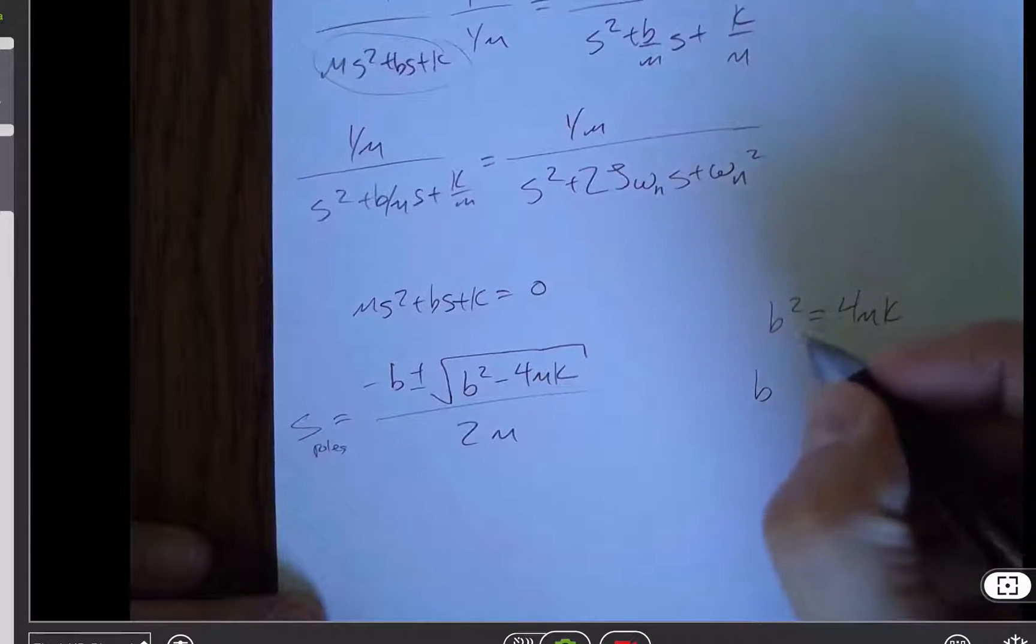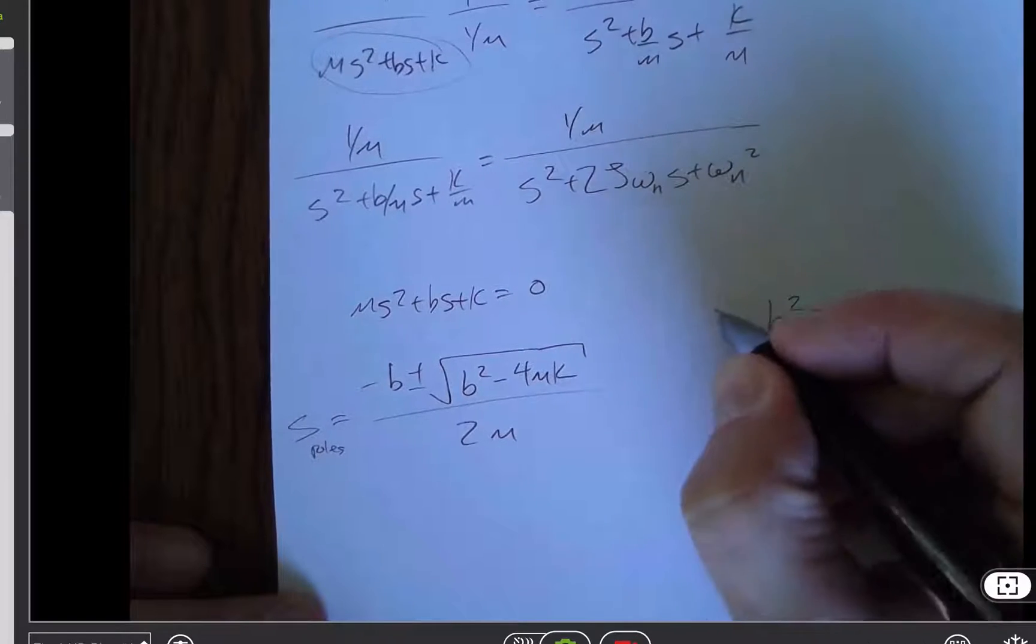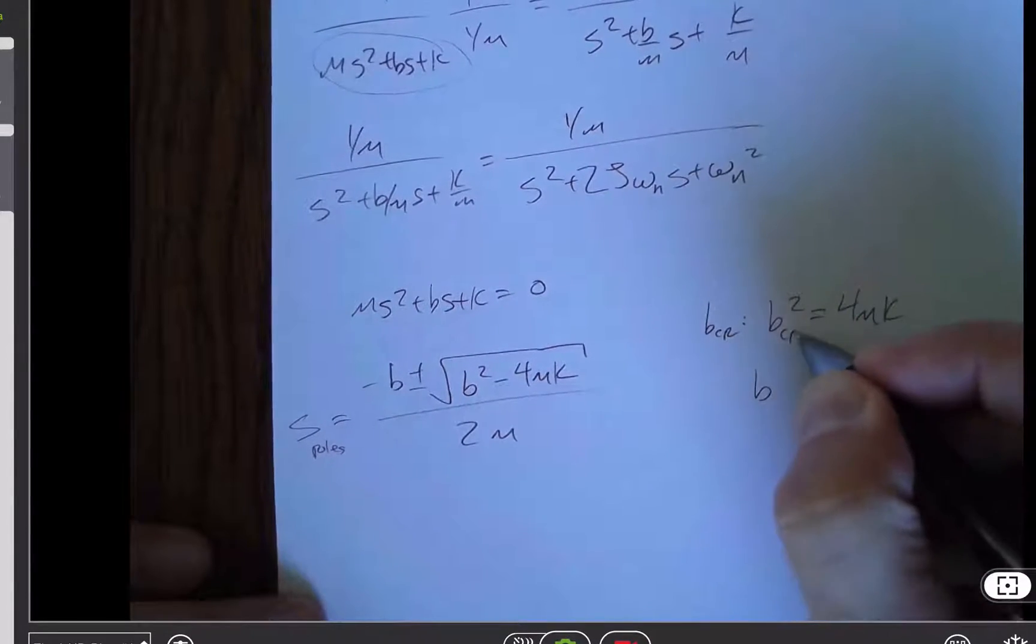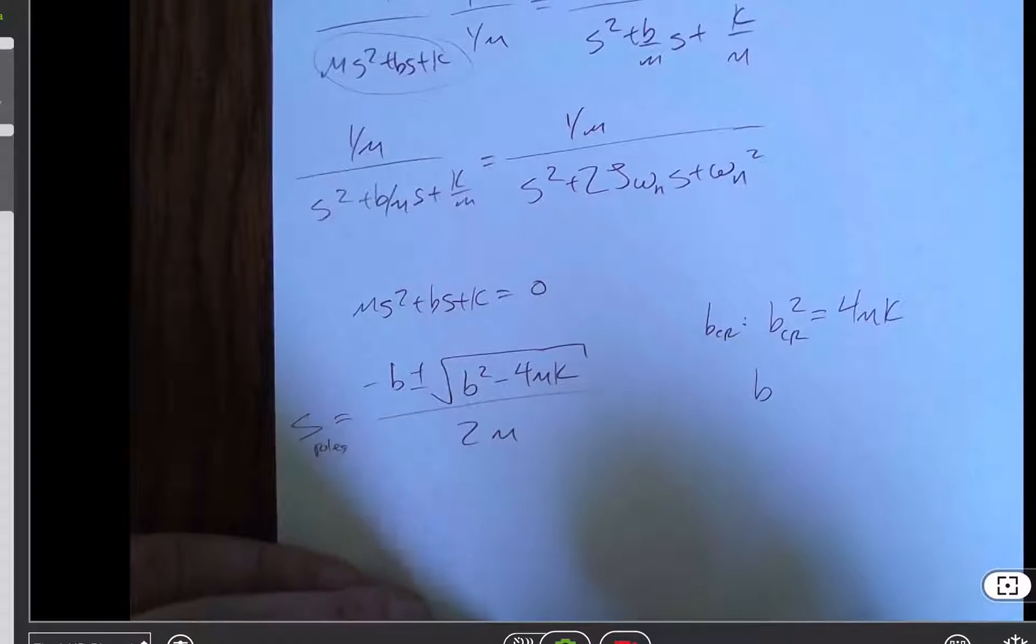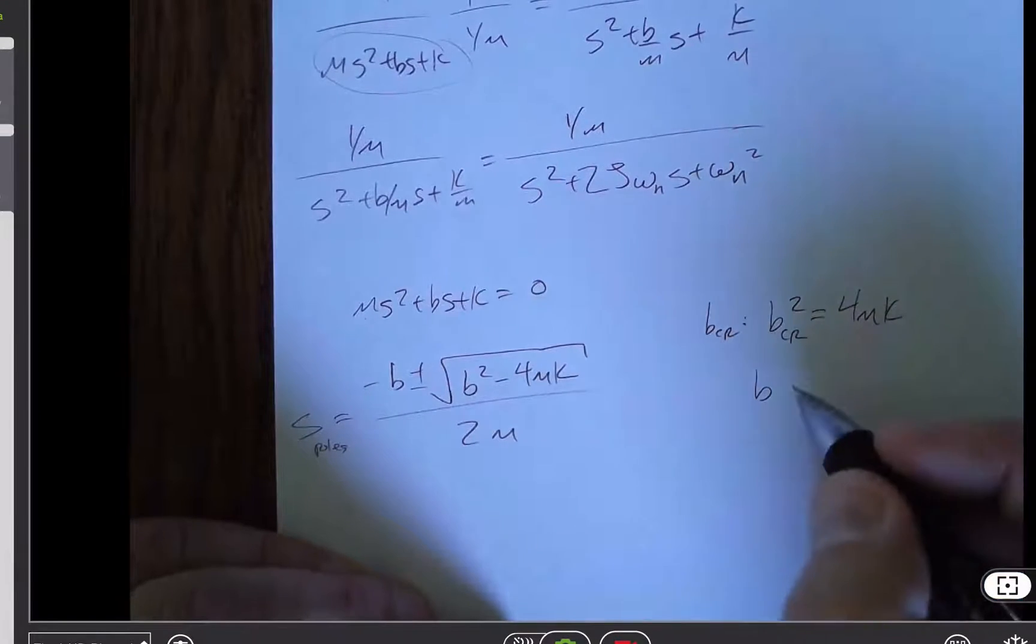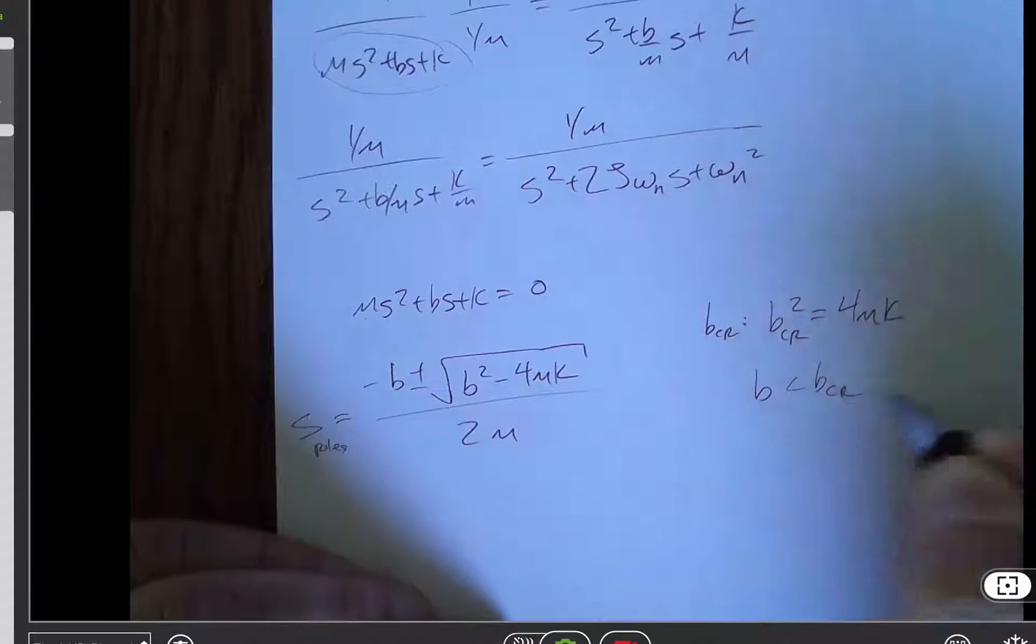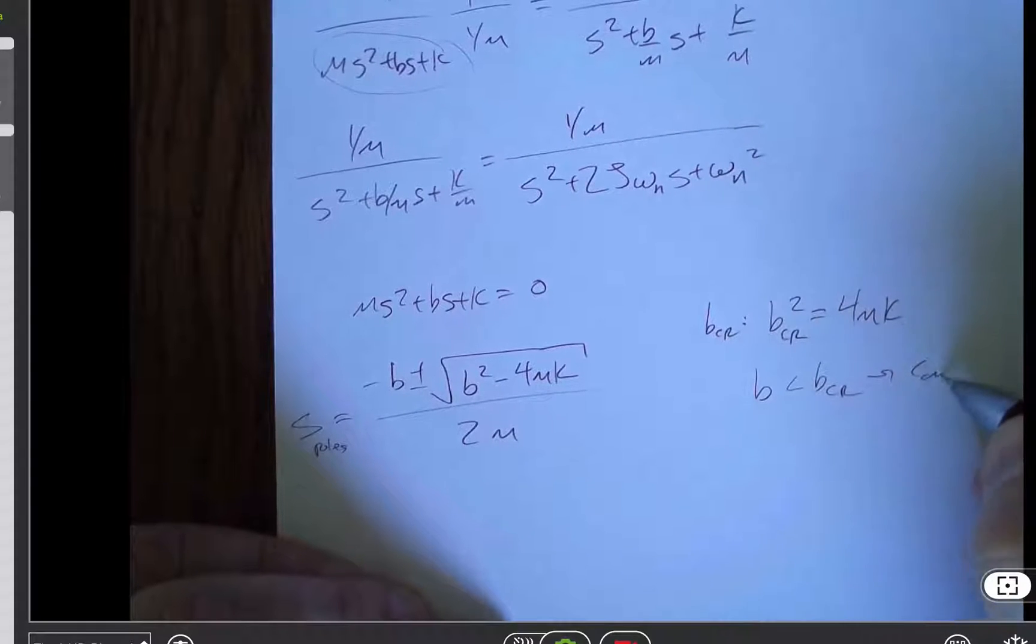So b, I'm going to define this to be b critical. So b critical is the value of b that causes b squared to equal 4mk. If b is less than b critical, that means we have complex roots.